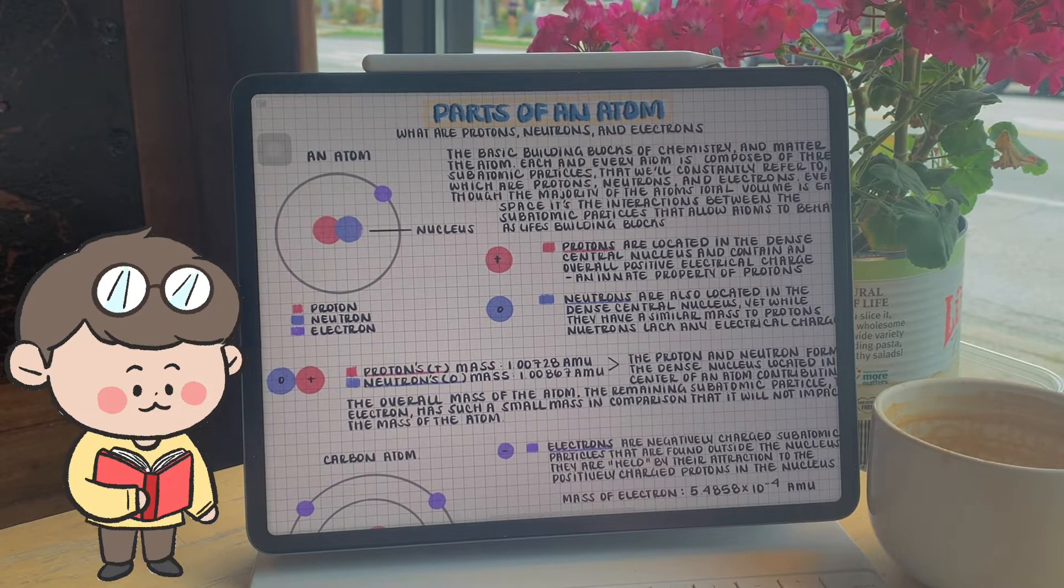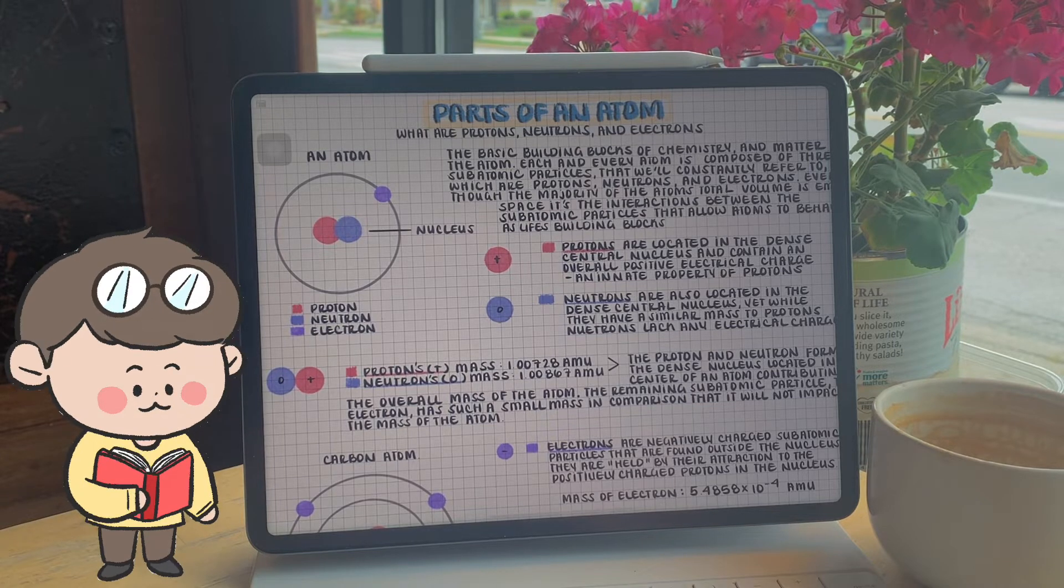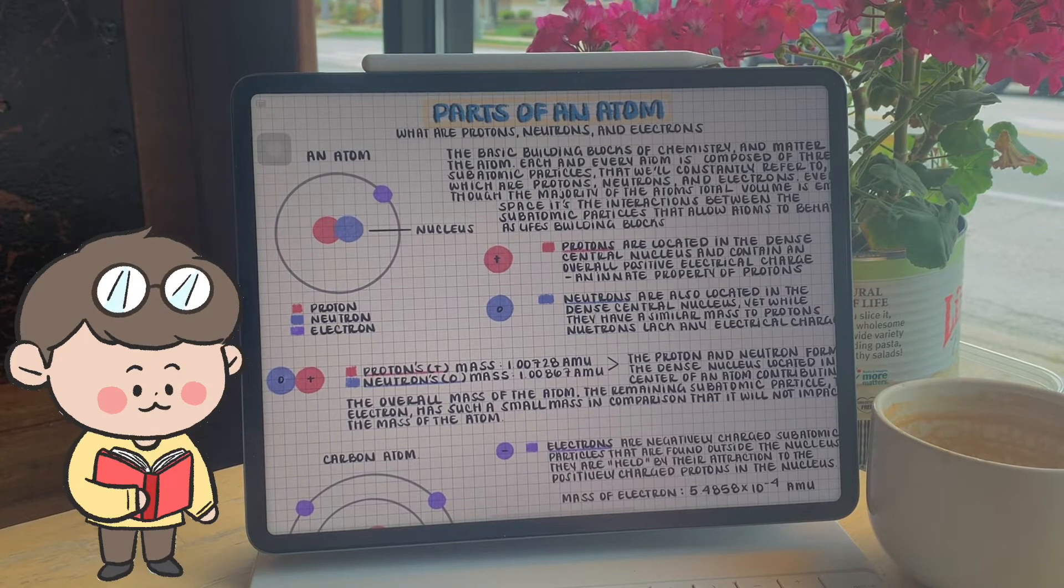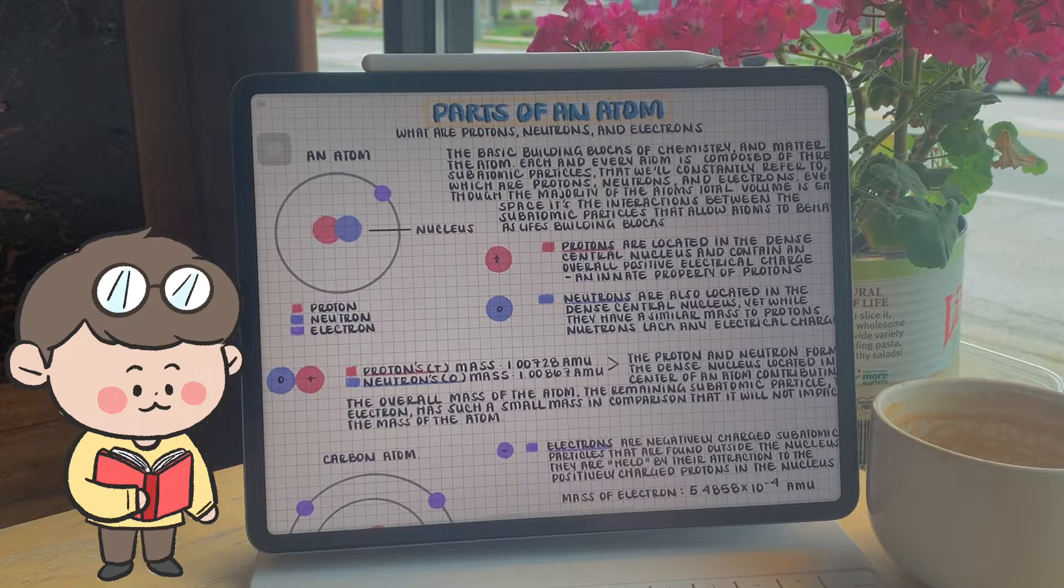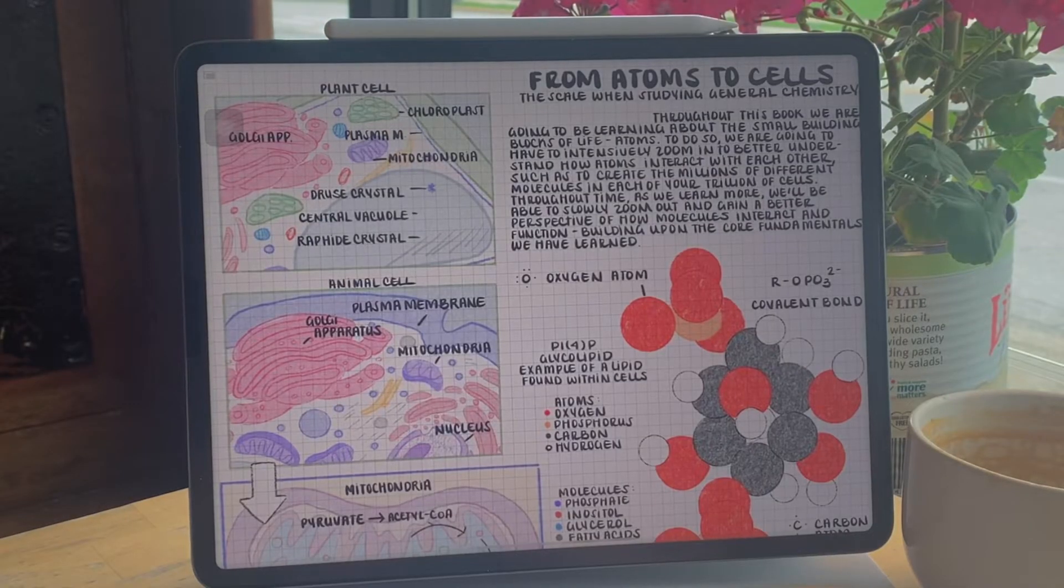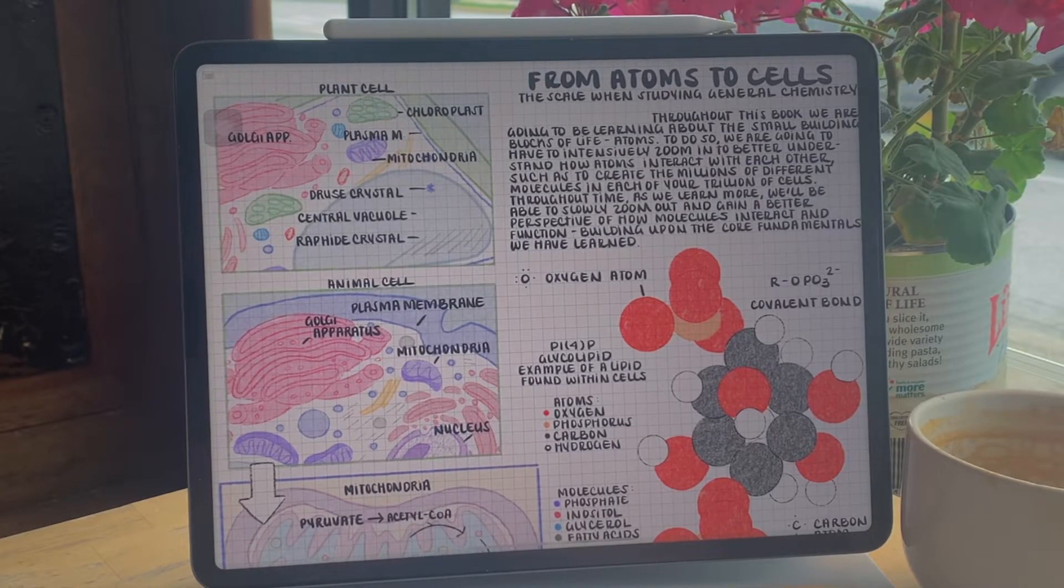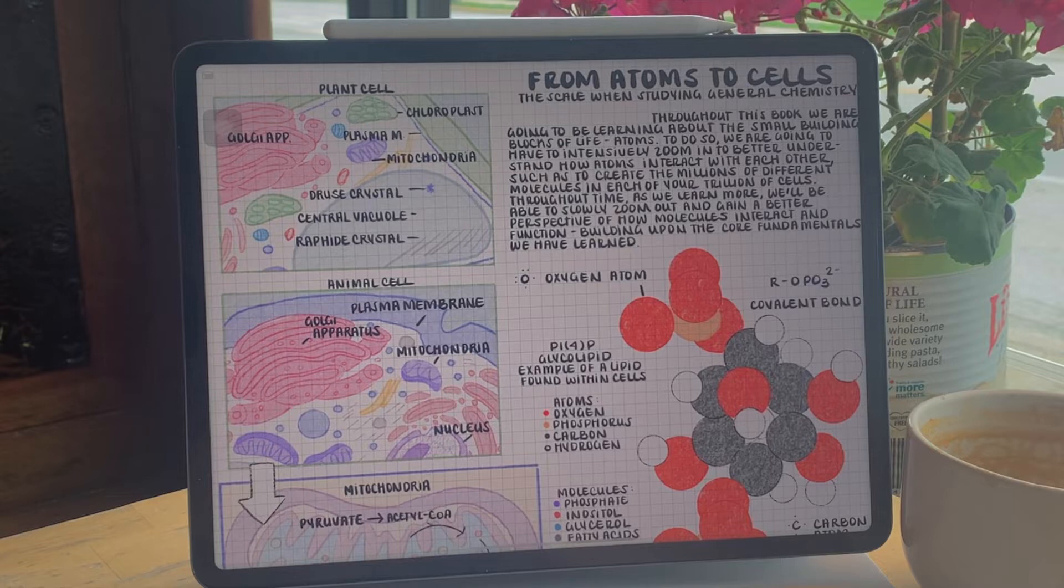which are protons, neutrons, and electrons. Even though the majority of the atom's total volume is empty space, it's the interactions between these particles that allow atoms to behave as life's building blocks.